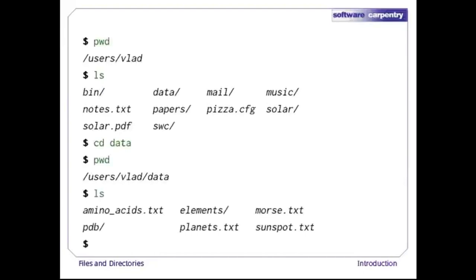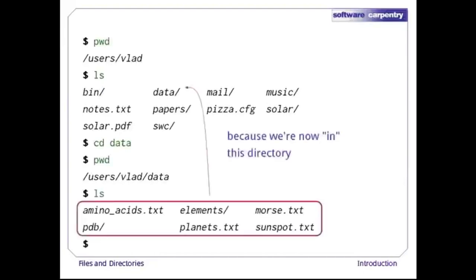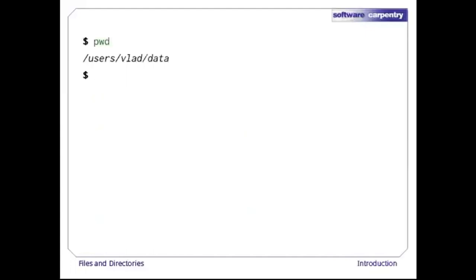If we run ls without arguments now, it lists the contents of /users/vlad/data, because that's where we are now. We can go down the directory tree, but how do we go up? If we're still in /users/vlad/data, we can use 'cd ..' to go up one level.